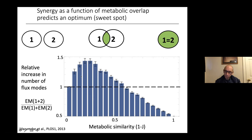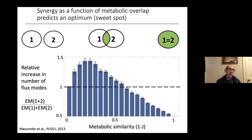At the opposite extreme, if two organisms have exactly the same metabolic capabilities, the elementary modes of the joined system equal each organism alone, giving a value of one-half. Performing these calculations, you can find that there is a maximum — a sweet spot of how much metabolic overlap leads to the maximal number of new metabolic pathways. This doesn't account for competition; it's purely about topology. But it points to the possibility of an ideal level of metabolic similarity that maximizes enhancement of metabolic capabilities.